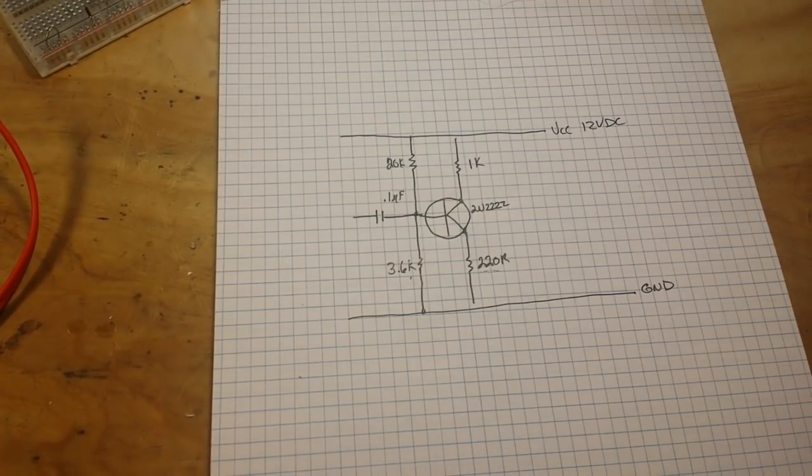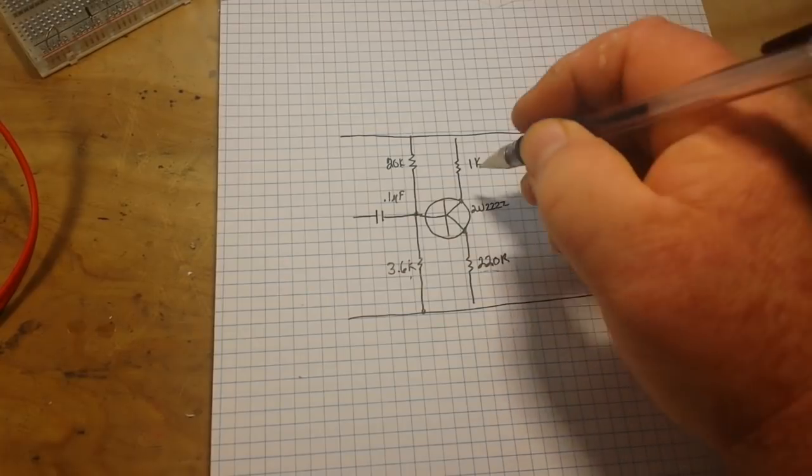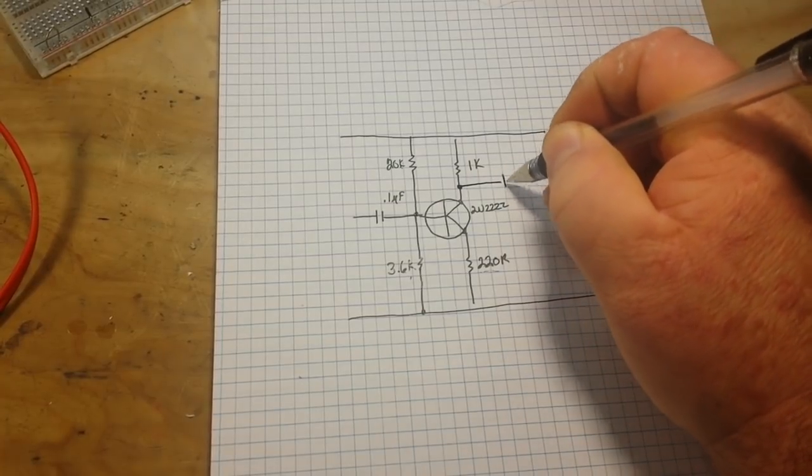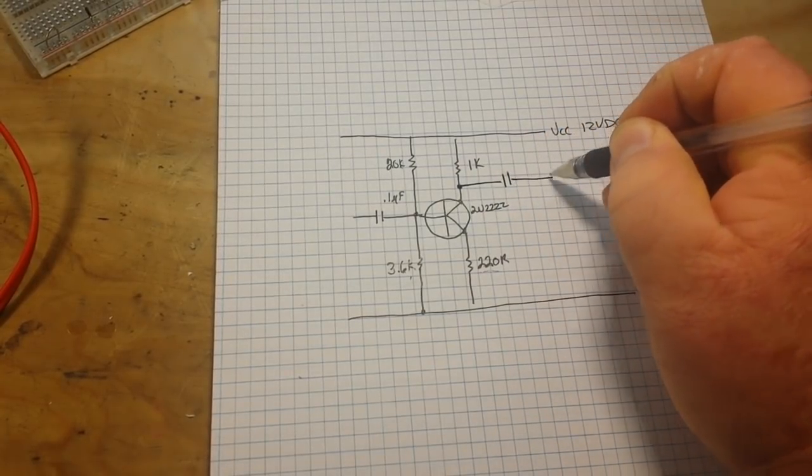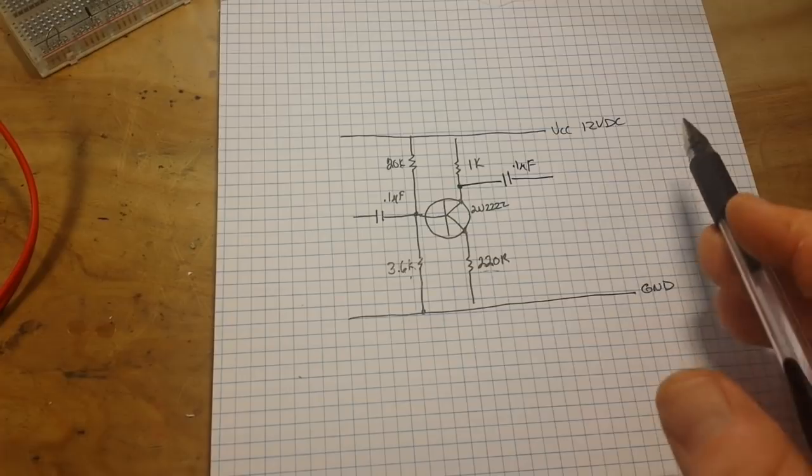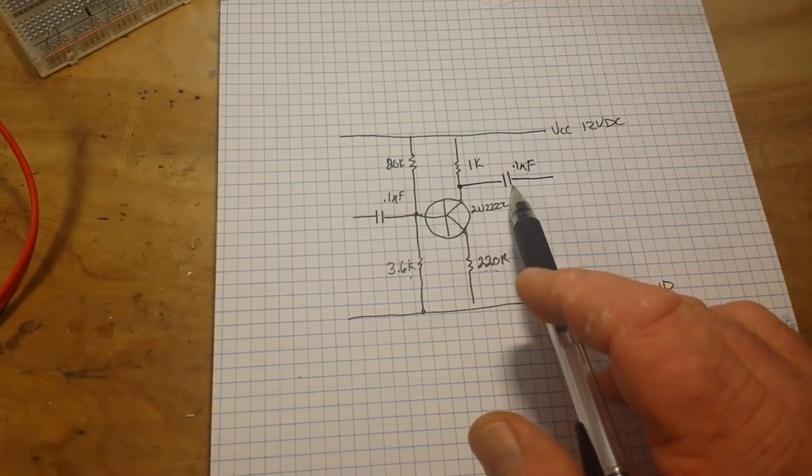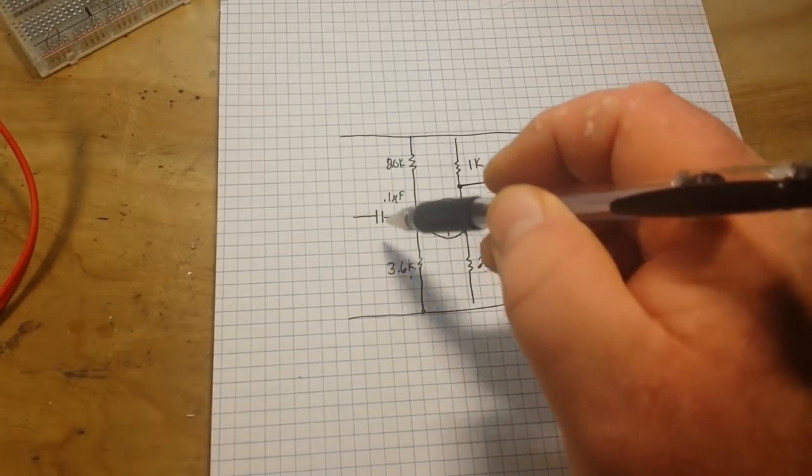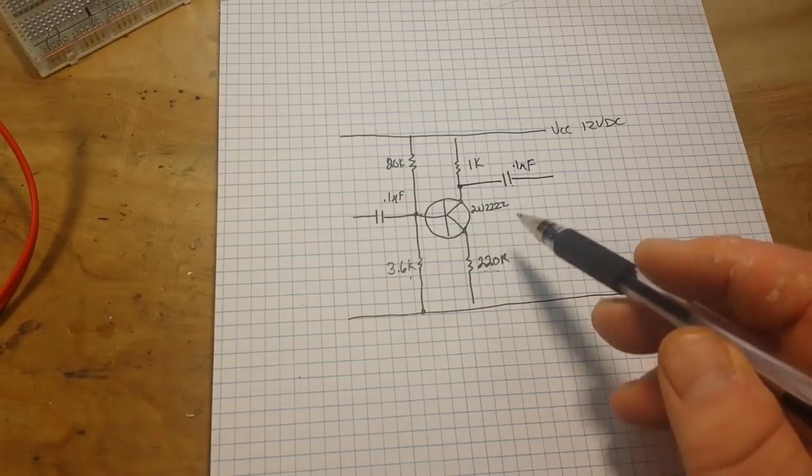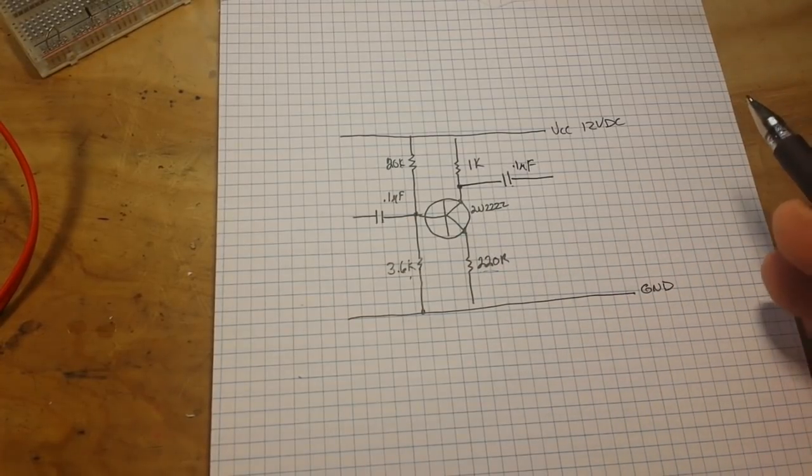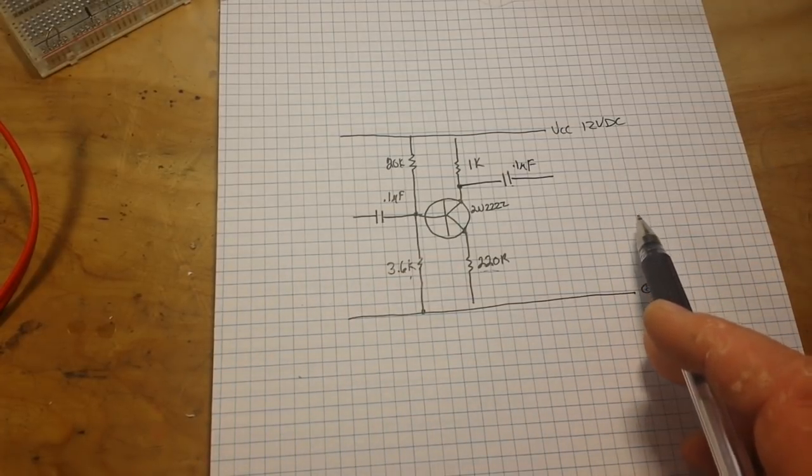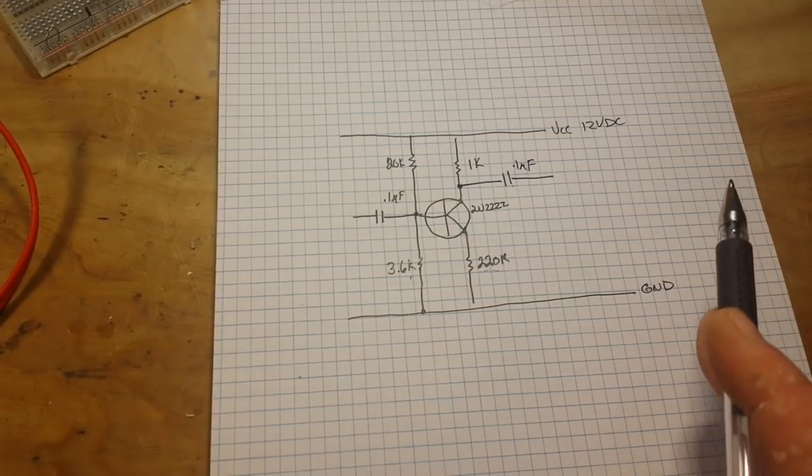Now we're going to take our output here off of the collector, and again we want to eliminate any DC coming out, so we're going to use another 0.1 microfarad capacitor. So we're blocking DC coming in, we're blocking DC coming out, so the only DC in the entire circuit is right here in the amplifier. The reason for that is so that we're only getting the AC, the audio signal in, audio signal out. We're not adding any DC to bias our circuit one way or another.